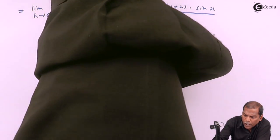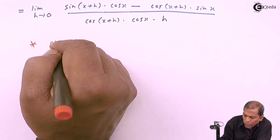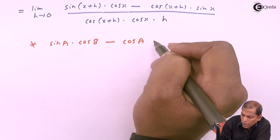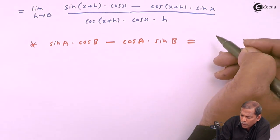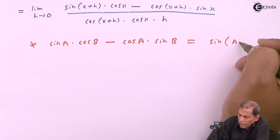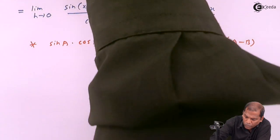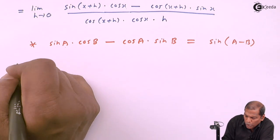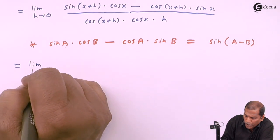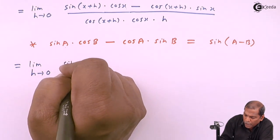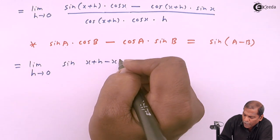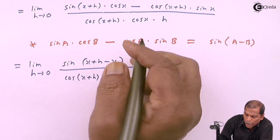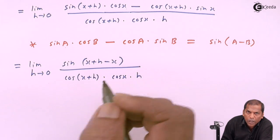Now the numerator uses the trigonometric formula: sin(A)cos(B) minus cos(A)sin(B) equals sin(A − B). Here, (x + h) represents A and x represents B. So the next step will be limit h tends to zero of sin[(x + h) − x], whole thing divided by cos(x + h) into cos(x) into h.